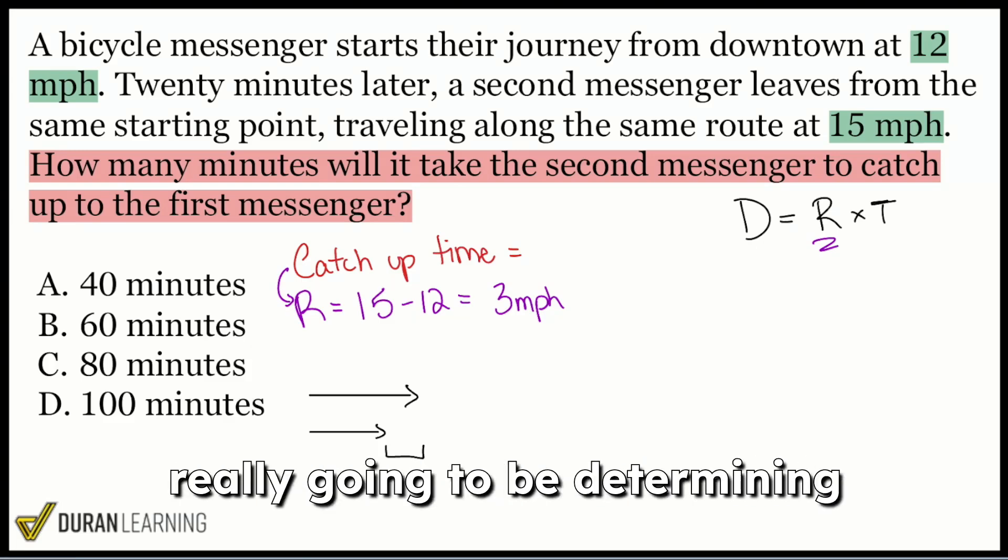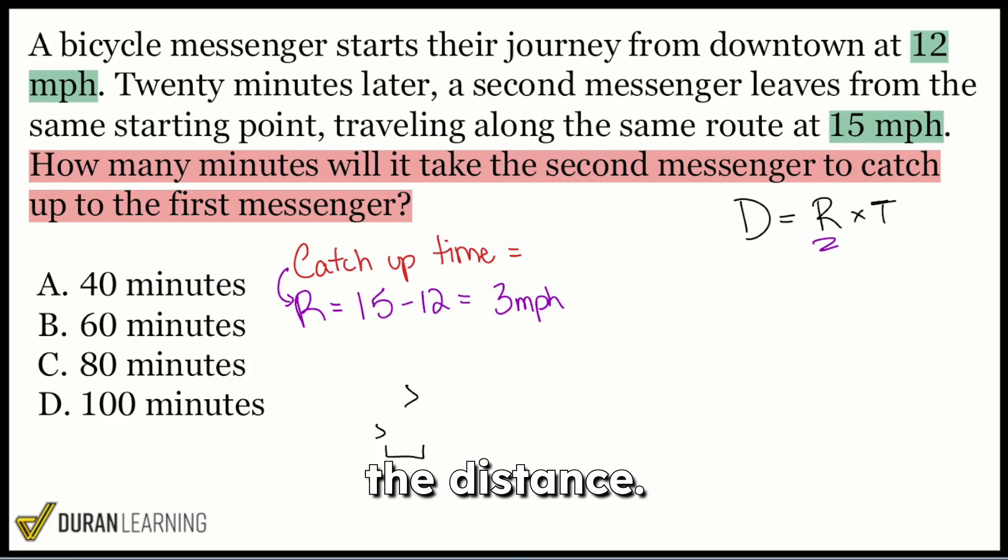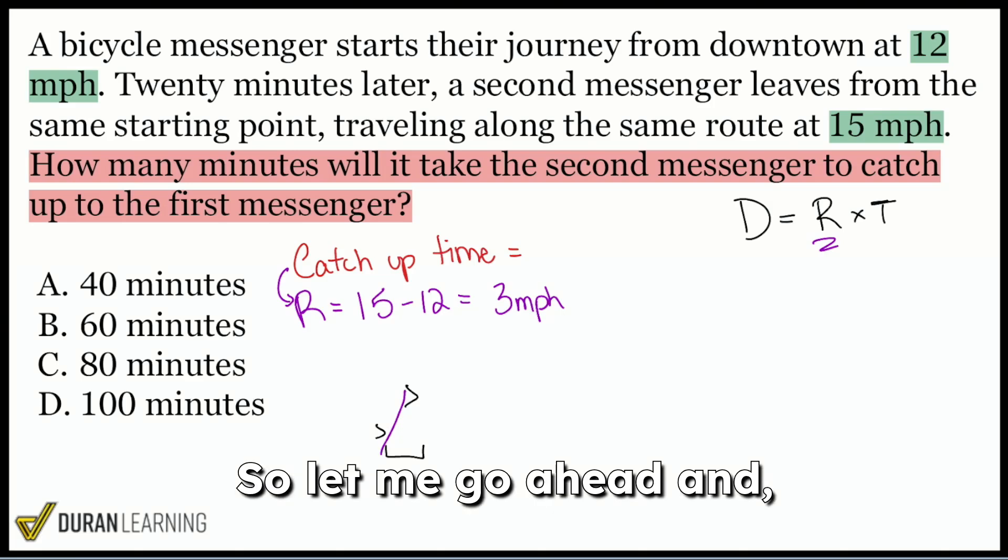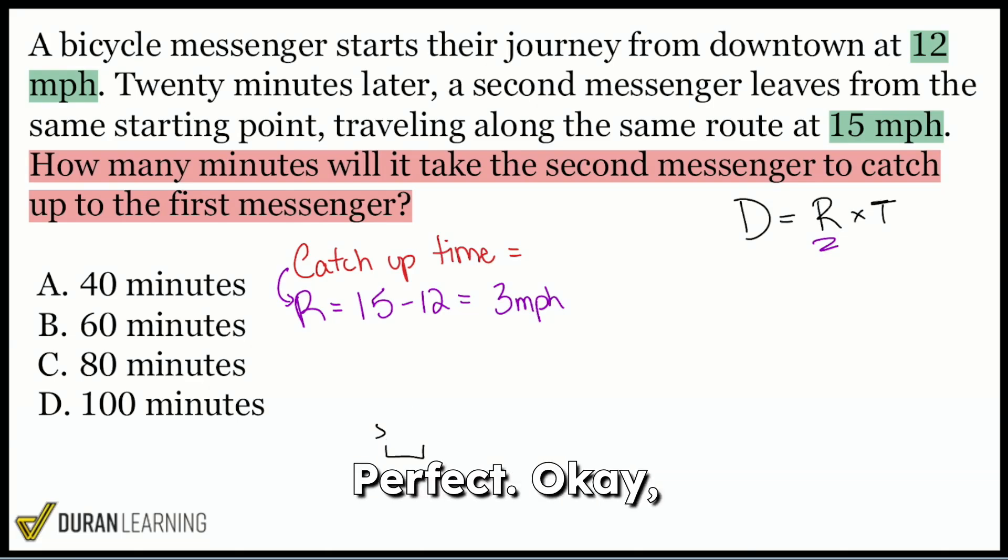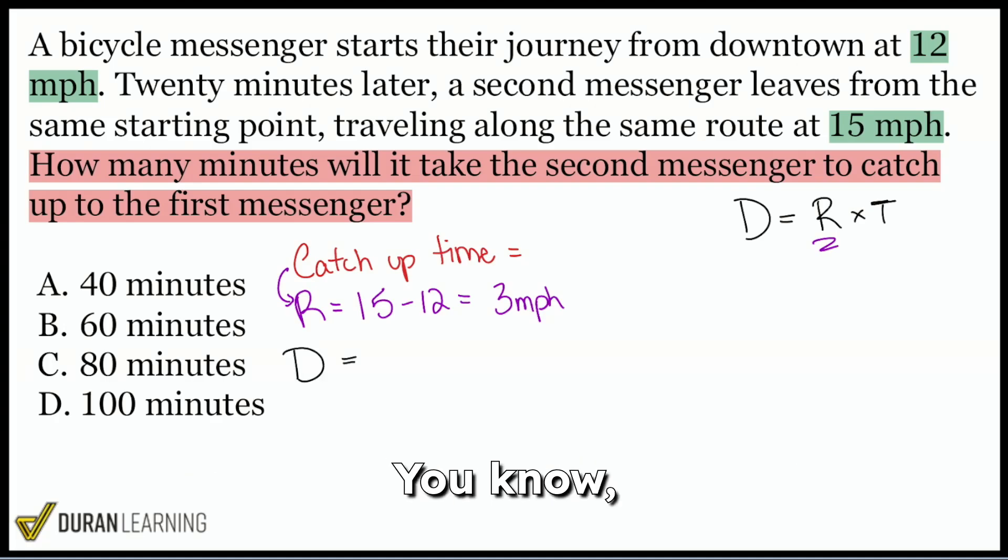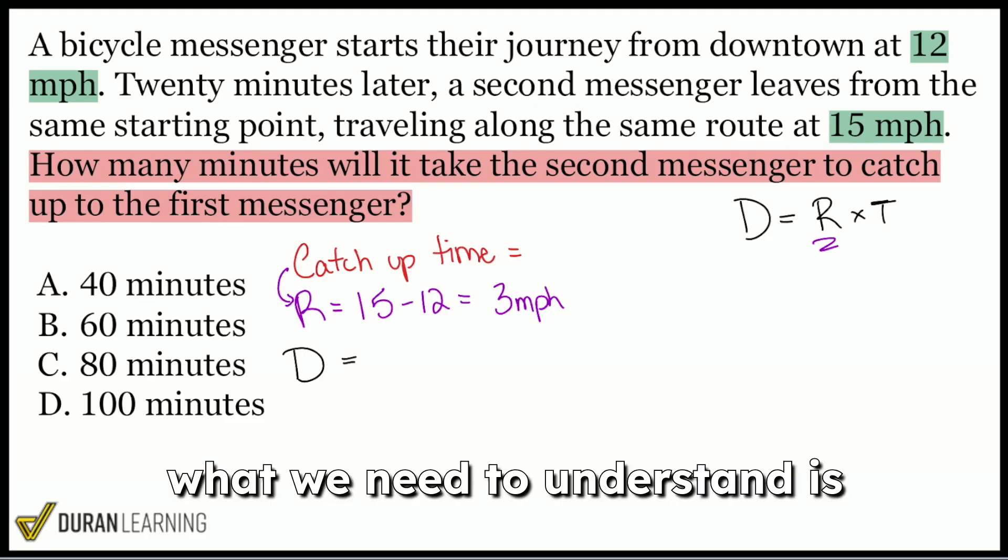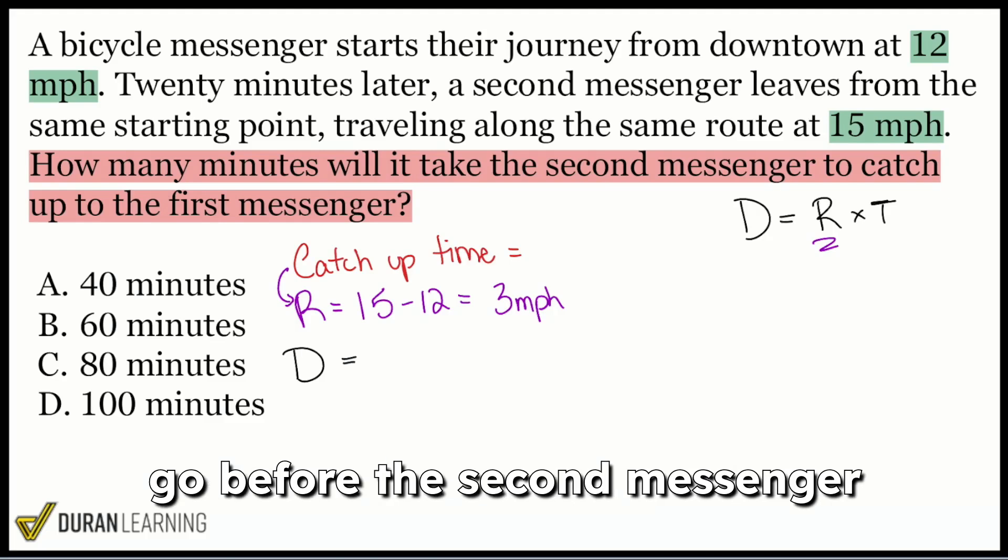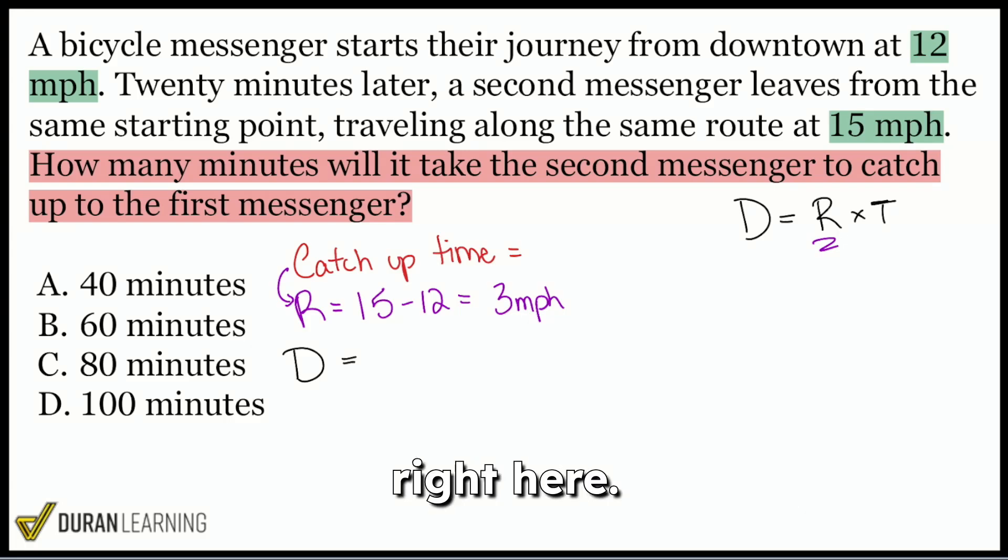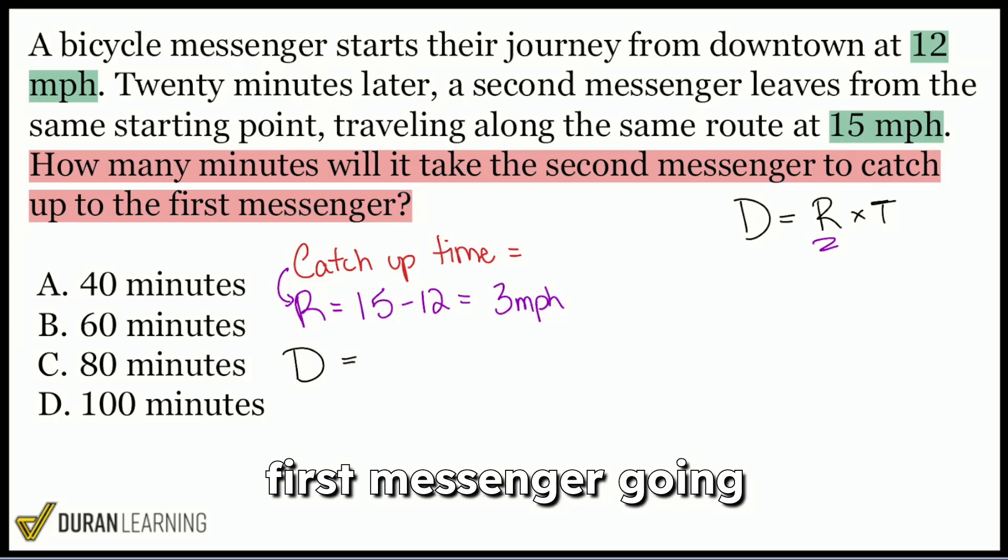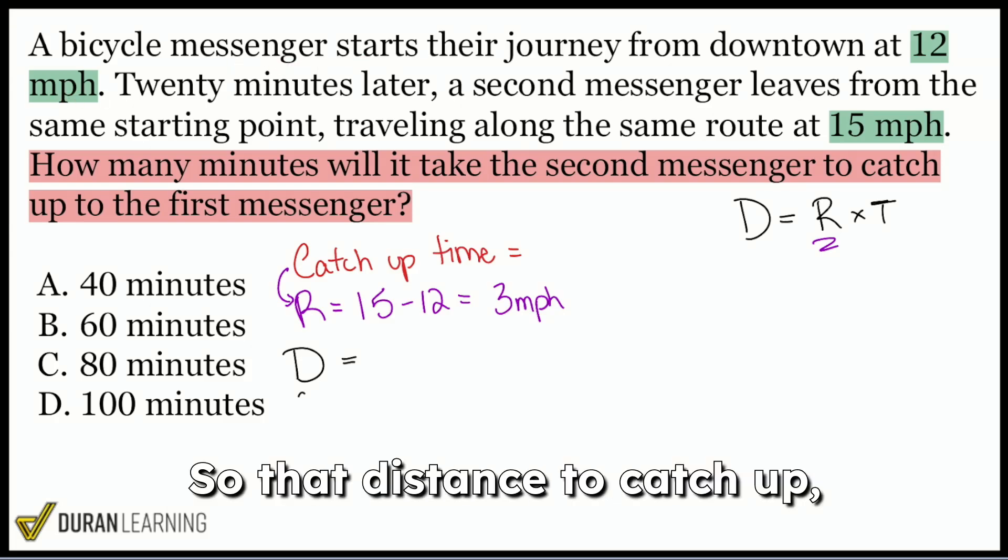The hardest part about this is really going to be determining the distance. How far do we have to catch up? So let me go ahead and do that. OK, so what's that distance that we're trying to catch up for? Well, what we need to understand is how far did that first messenger go before the second messenger started writing? And we have that information right here. We see that 20 minutes pass right there, 20 minutes pass in terms of the first messenger going 12 miles an hour. So that distance to catch up.